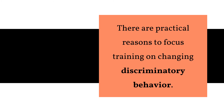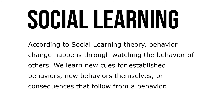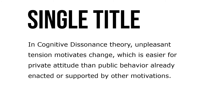There are practical reasons to focus training on changing discriminatory behavior. According to social learning theory, behavior change happens through watching the behavior of others — we learn new cues for established behaviors, new behaviors themselves, or consequences that follow from a behavior. In cognitive dissonance theory, unpleasant tension motivates change, which is easier for private attitudes than for public behavior already enacted or supported by other motivations.